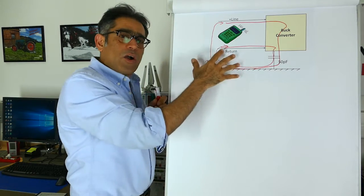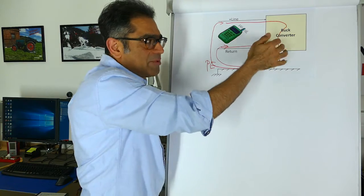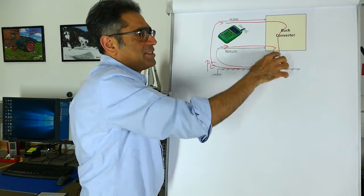And these are common mode currents. The currents that couple via some capacitance between the body and the chassis and then return.